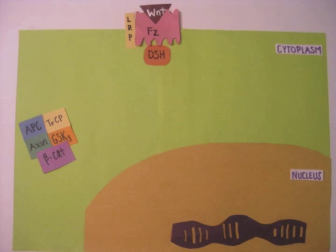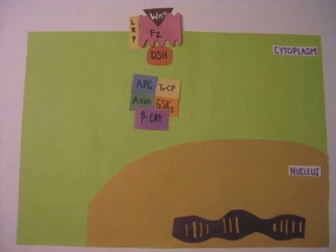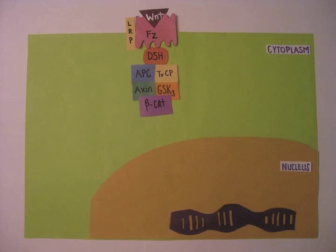Proteins such as APC noted in blue, TRCP yellow, axon green, GSK3 orange, beta-catenin purple, and other proteins such as CK1 alpha make up the destruction complex. The destruction complex is shut down by disheveled.